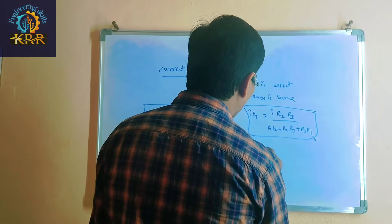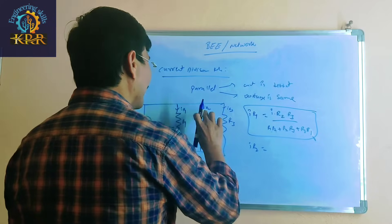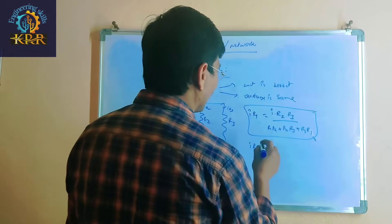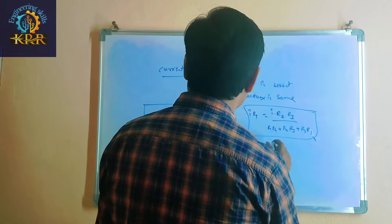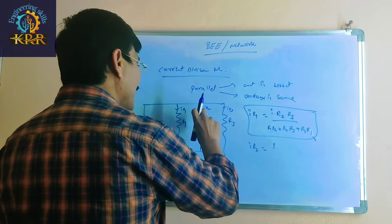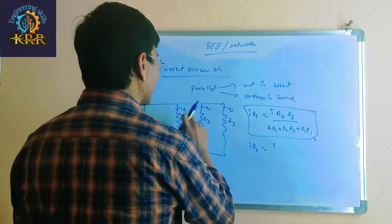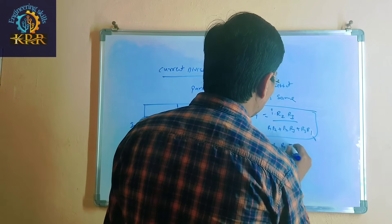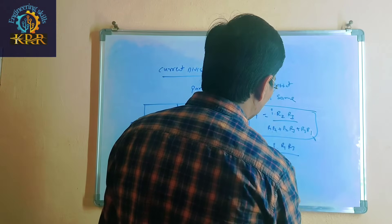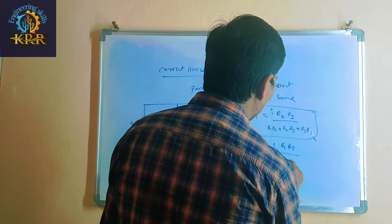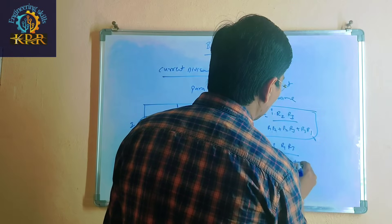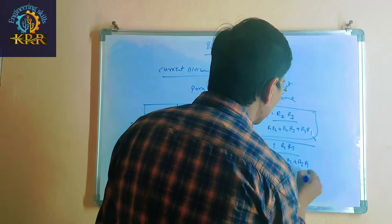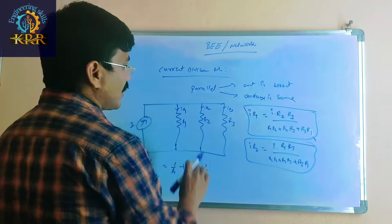After that, for current at R2, you take the total current and multiply by the remaining two resistances — R1 and R3 — divided by R1 plus R2 plus R3. This is how you calculate the current in the R2 branch.